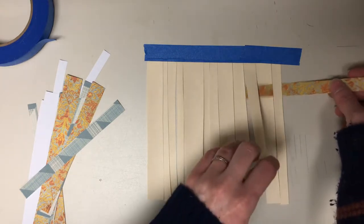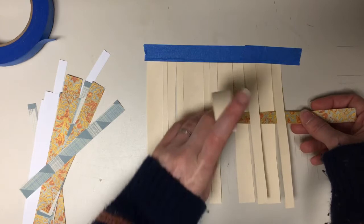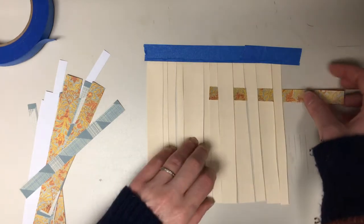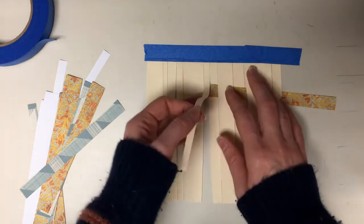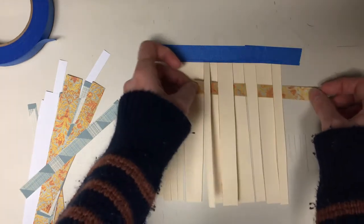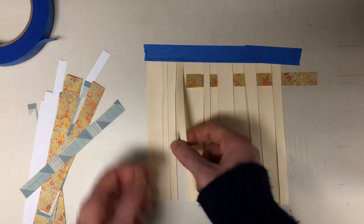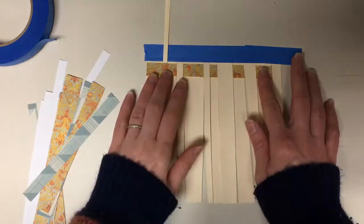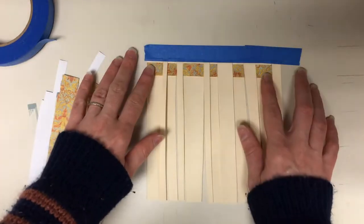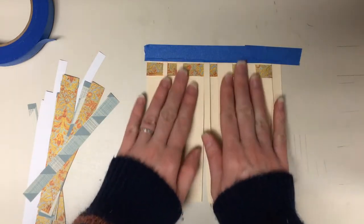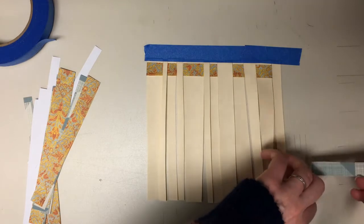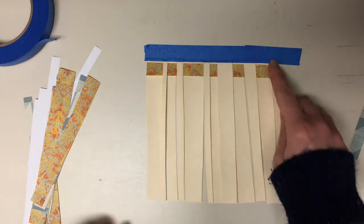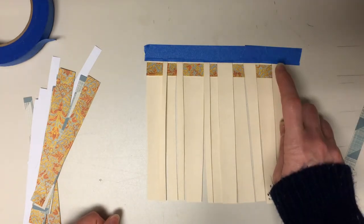Plain weave is every other, so up, down, up, down - each alternating strip gets pulled up, your strip gets slid through. Slide this up to the top as much as you can. Now I'm going to work with a different colored strip and I'm going to alternate.